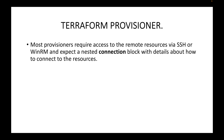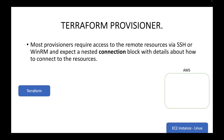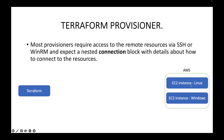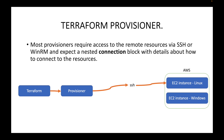Most provisioners require access to remote resources via SSH or WinRM and expect a nested connection block with details about how to connect. For example, using Terraform we may have launched a Linux machine and a Windows machine. For file provisioner or remote-exec, you need to provide an additional connection block. The provisioner will use the SSH connection block to connect to the Linux machine and the WinRM connection block to connect to the Windows machine.